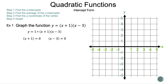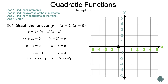Set each binomial factor equal to zero and solve. First, x + 1 = 0 gives x = −1 — plot it on the graph. Second, x − 3 = 0 gives x = 3 — plot it on the graph as well.